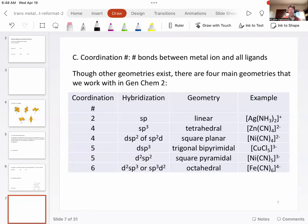The coordination number is the number of bonds between the metal ions and all ligands. Though other geometries exist, there are four main geometries that we will work with in Gen Chem 2. Those are going to be with coordination numbers of 2, 4, and 6.